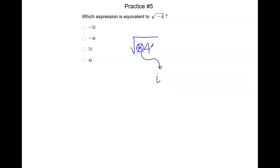Now we just have the square root of 4, and we know that the square root of 4 is 2, so our solution is 2i.